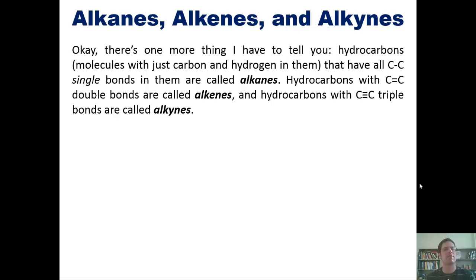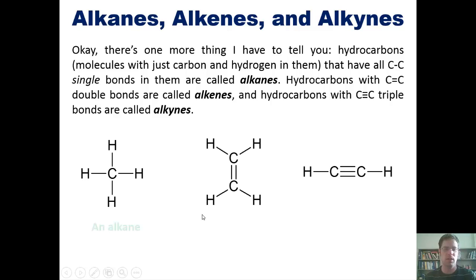Hydrocarbons, which are molecules that just have carbon and hydrogen in them, that have all carbon-carbon single bonds in them are called alkanes. Hydrocarbons that have carbon-carbon double bonds in them are called alkenes, while hydrocarbons that have carbon-carbon triple bonds in them are called alkynes. And you can see that all shown right here. An alkane, an alkene, and an alkyne. Please make sure that you memorize that, because the names are sort of important in the world of organic chemistry.